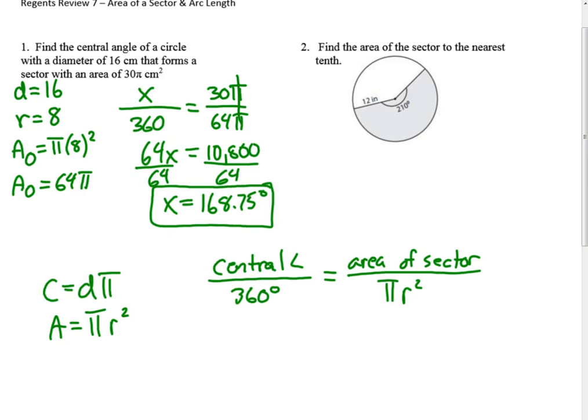Question two is the other way. This is find the area of the sector to the nearest tenth, and the sector would be the shaded region. In this case, we know that our radius is 12, so the area of the circle would be pi times 12 squared, which would be 144 pi. So here's our proportion. Central angle, 210 over 360...